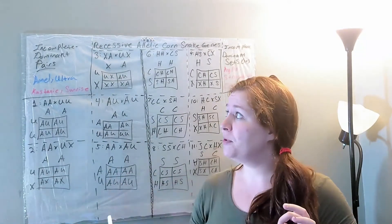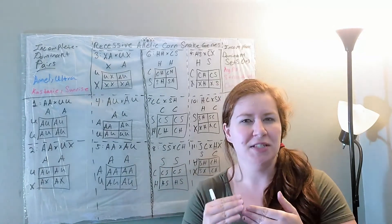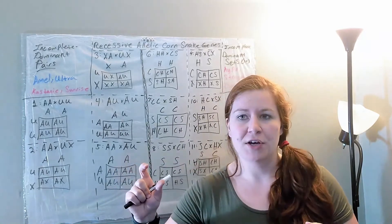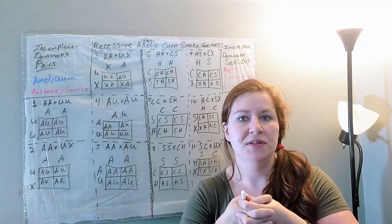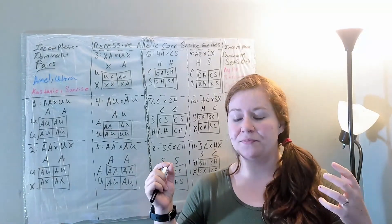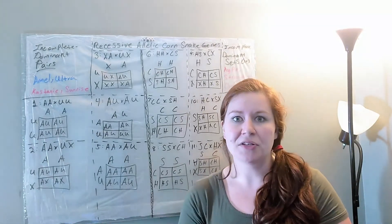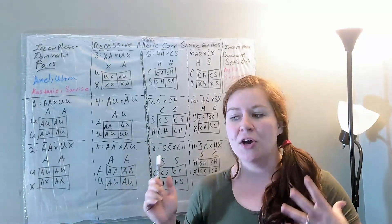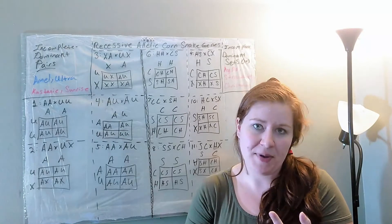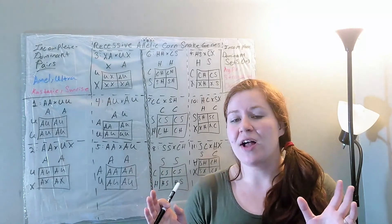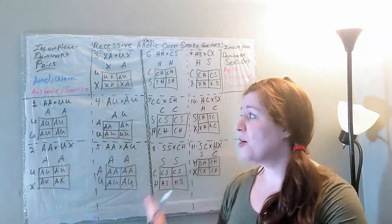I'm going to make a side note about the difference between incomplete dominant and co-dominant. Incomplete dominant is when the two come together and make a mix — imagine a glass of blue water and a glass of red water poured together making purple. Co-dominance is when you have water and oil poured together and the oil floats on top — they're in the same space but not mixing. We don't have co-dominance in corn snakes yet, but a co-dominance example would be a red and white flower breeding to produce a flower with both red and white petals, rather than pink.